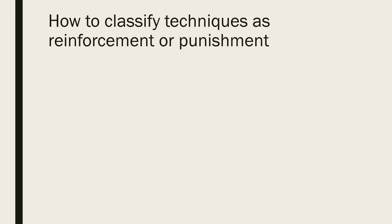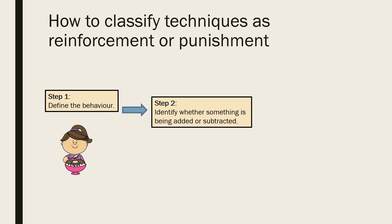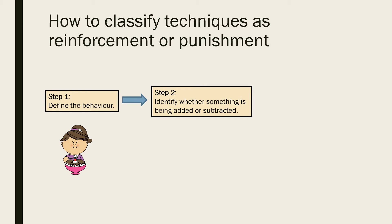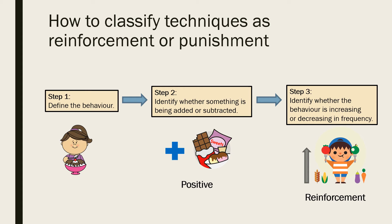It can be difficult to identify whether the operant conditioning technique used in a scenario is reinforcement or punishment — in particular, distinguishing between negative reinforcement and punishment can be challenging. These three simple steps can help. First, define the behaviour. Second, identify whether something is being added or subtracted. Third, identify whether the behaviour is increasing or decreasing in frequency. For example, a child given dessert for eating all their vegetables — a pleasant stimulus is added, and the behaviour increases — so this is positive reinforcement.